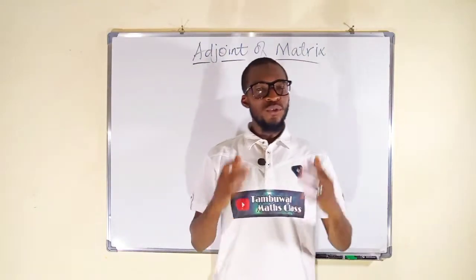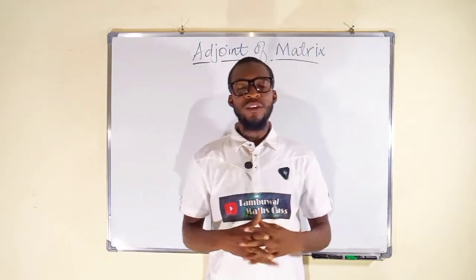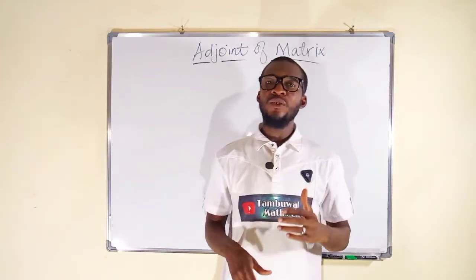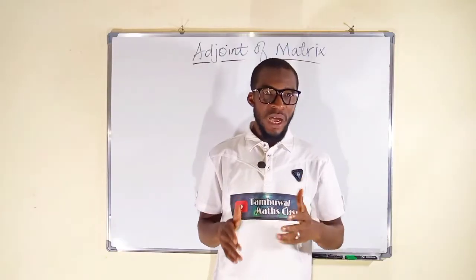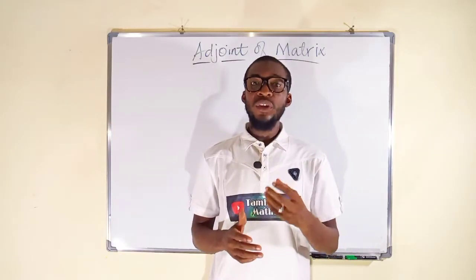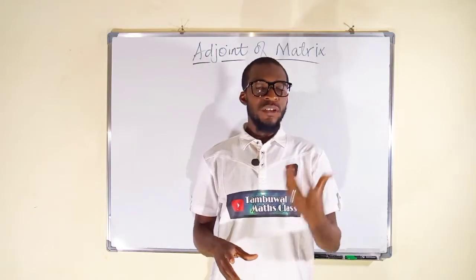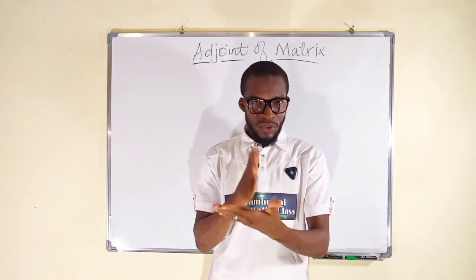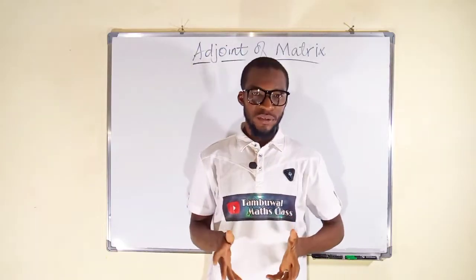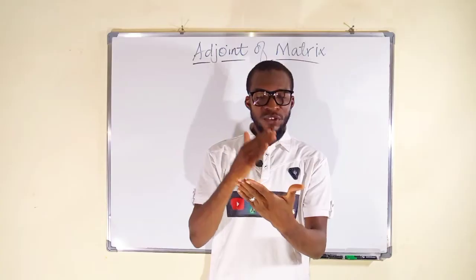Hello, good day viewers. In this tutorial we are going to learn how to find the adjoint of a matrix. To find the adjoint, you need to know how to find the minors and cofactors of your matrix. You also need to know how to find the transpose of a matrix. In this tutorial we are going to restrict the discussion to 2x2 and 3x3 matrices.